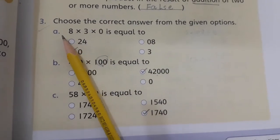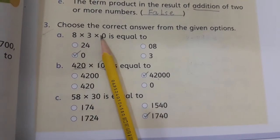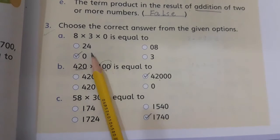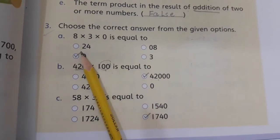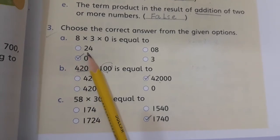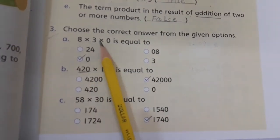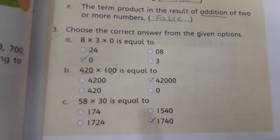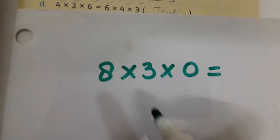So let's see what the question is: 8 multiplied by 3 multiplied by 0 is equals to — 24, 8, 0, or 3. So what is the correct answer? We will choose the correct one and we will put a tick on that answer. So why is the answer 0? First of all, we will solve it.